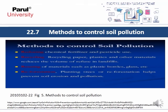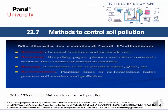Methods to control soil pollution include reducing chemical fertilization and pesticide use, recycling paper, plastic, and other materials to reduce the volume of refuse in landfills, reusing materials such as plastic bottles and glass, and planting trees or reforestation to help prevent soil erosion and pollution.